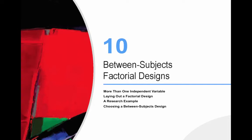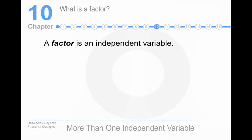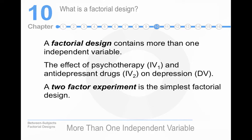Today we're going to talk about chapter 10 from our book, which is about between-subjects factorial designs. So the first question we want to ask is, what is a factor? A factor is the same thing as an independent variable. They are interchangeable terms. A two-factor study is a two-independent variable study. So a factorial design contains more than one independent variable.